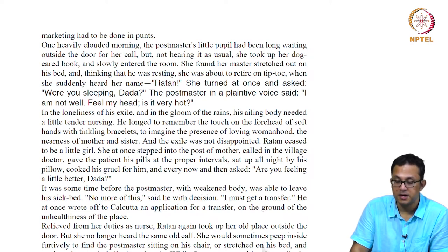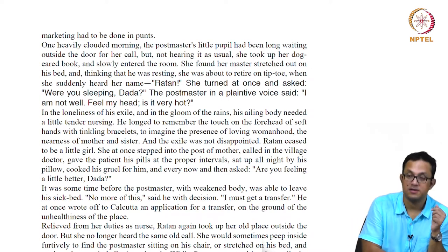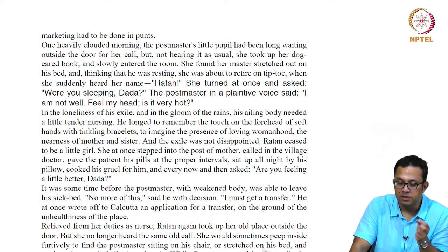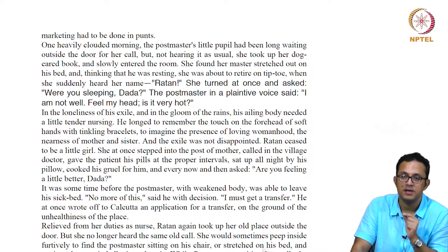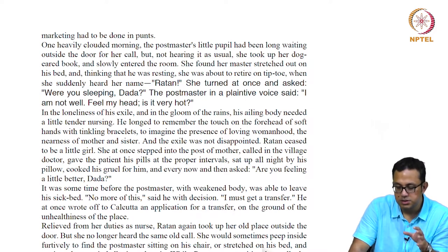In the loneliness of his exile and the gloom of the rains, his ailing body needed little tender nursing. He longed to remember the touch of soft hands with tinkling bracelets — to imagine the presence of loving womanhood, the nearness of mother and sister. Look at how femininity is constructed in the story through affective signifiers: the touch of the bracelet, the tinkling of the bracelet, the touch of the finger — all these little metonymic markers of womanhood are dramatized at this point.